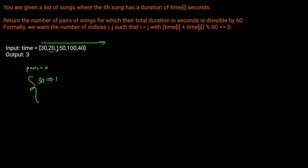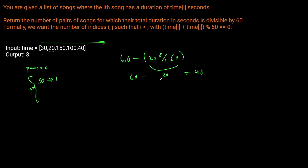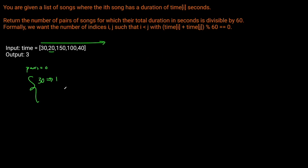Moving on to 20: is it immediately divisible by 60? No. We check the dictionary for 60 minus (20 modulo 60), which is 60 minus 20 equals 40. There's only a 30 in the dictionary, so no match. We populate the dictionary with 20, count of one.